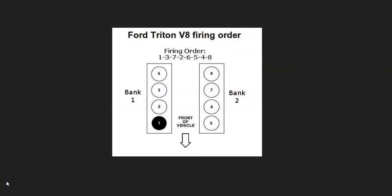If you have a V6 or V8 engine, you're going to have two banks. Bank one is always the side of the engine with the number one cylinder, and the opposite of that is going to be bank two. So if you find the number one cylinder, that's going to be bank one, and that's the side that's having the issue.